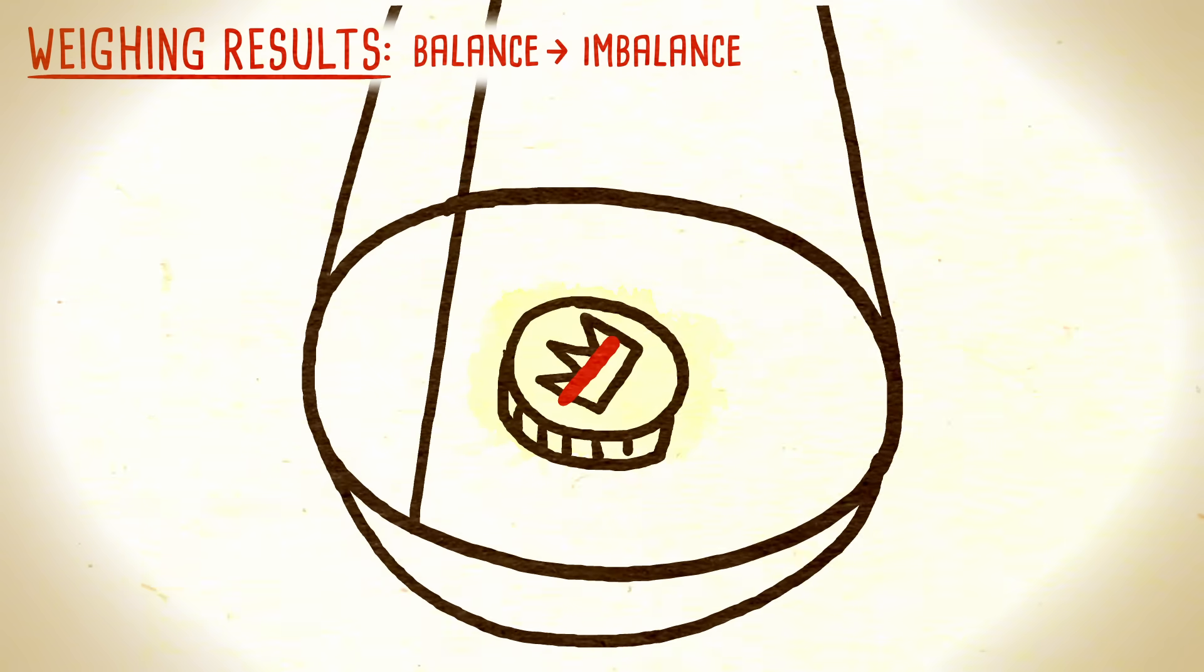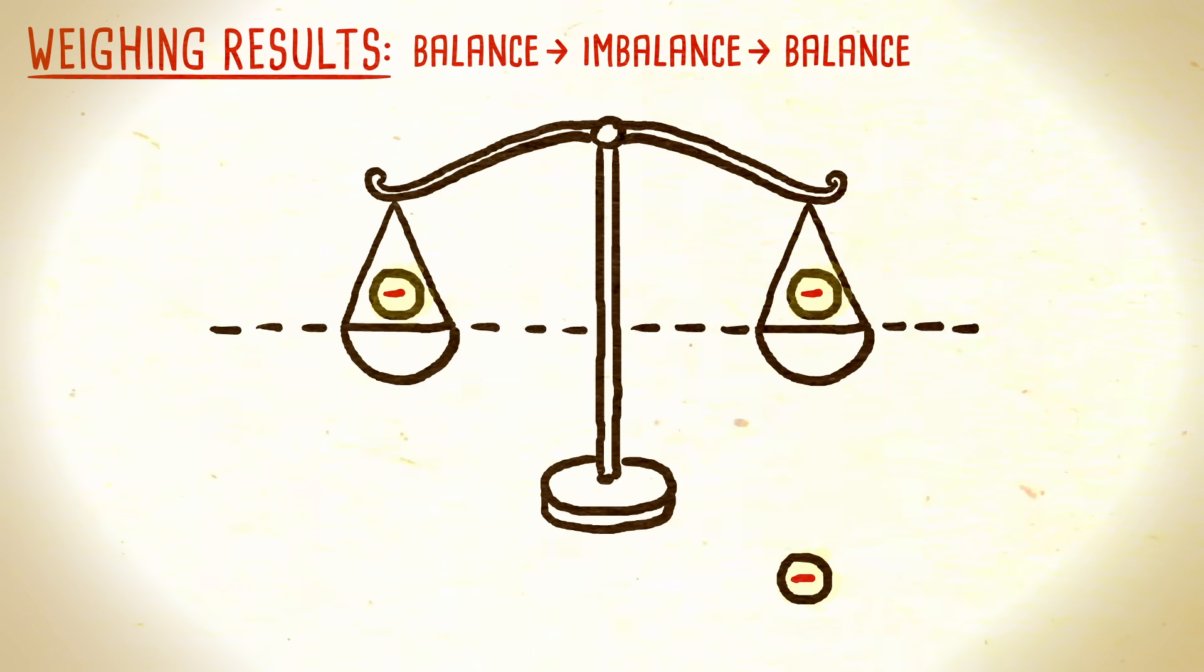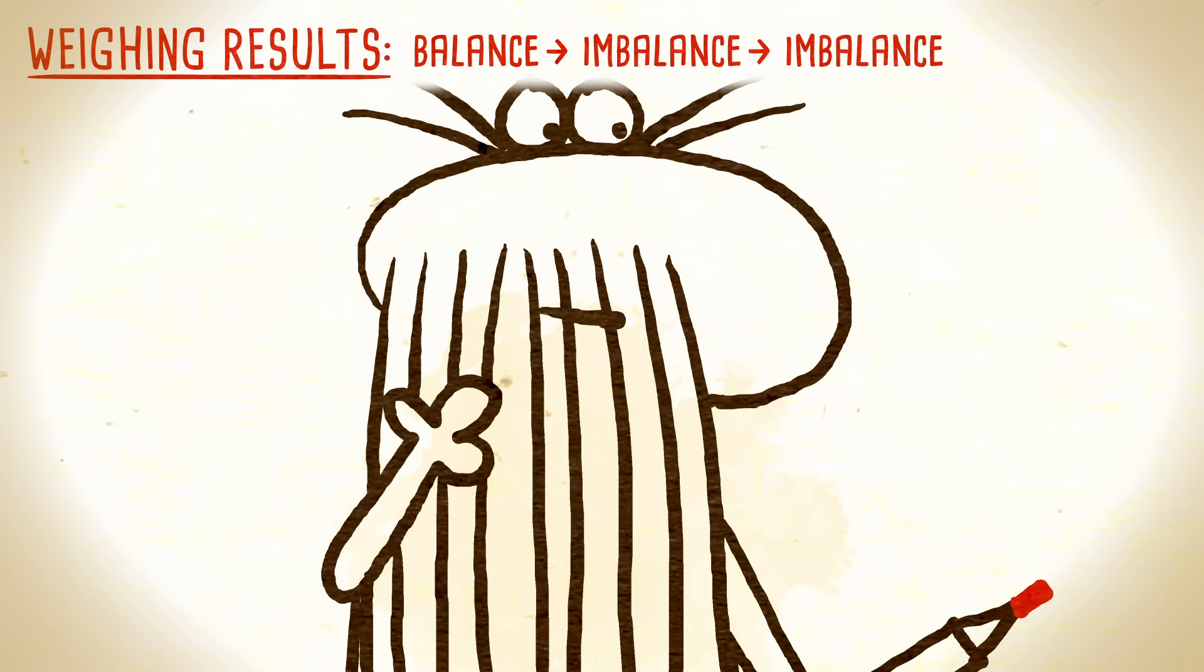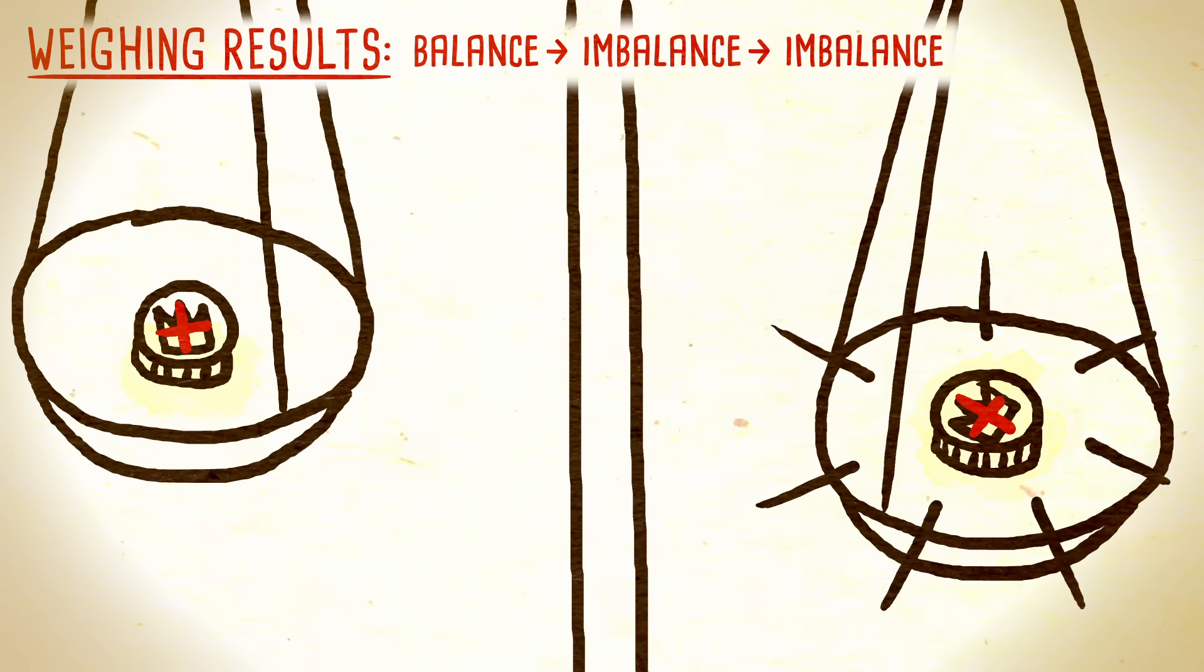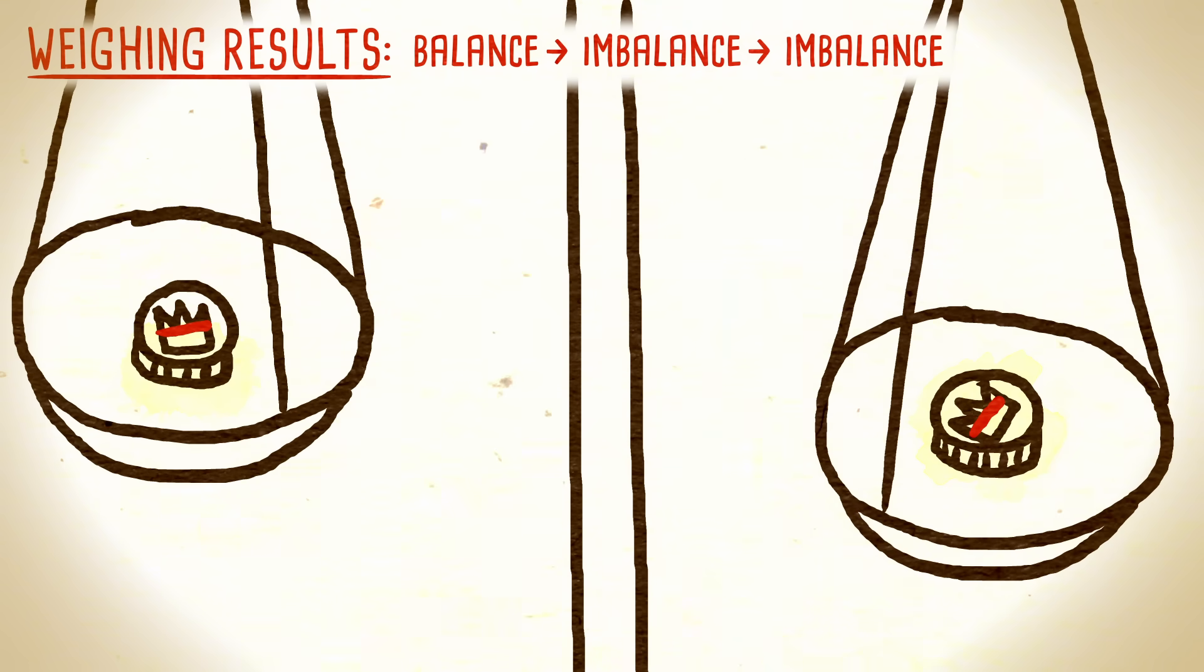Now take two of the newly marked coins and weigh them against each other. If they balance, the third coin is fake. Otherwise, look at their marks. If they are plus coins, the heavier one is the imposter. If they are marked with minus, it's the lighter one.